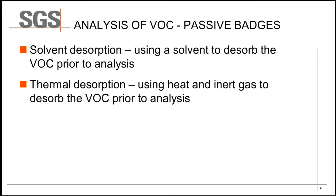The analysis of passive sampling badges for VOCs can be broadly categorised into two groups depending on how the VOCs are analysed. The first is solvent desorption, which involves using a solvent to desorb the VOCs prior to analysis. A more recent technique is thermal desorption, which uses heating and inert gas to release the VOCs prior to analysis.